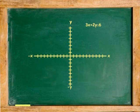One more example. Graph the inequality 3x plus 2y is less than or equal to 6. Because the inequality is not in slope-intercept form, we first turn it into slope-intercept form by solving for y.